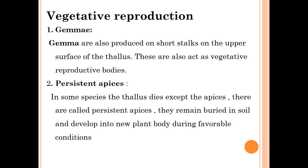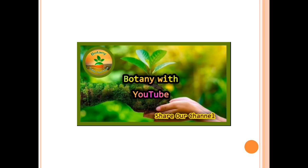The persistent apices remain buried in the soil and develop into a new plant body during favorable conditions. The other parts of the plant die, and only the apex remains in the soil. These apices or tips have the ability to produce new plants, and this process is called persistent apices.